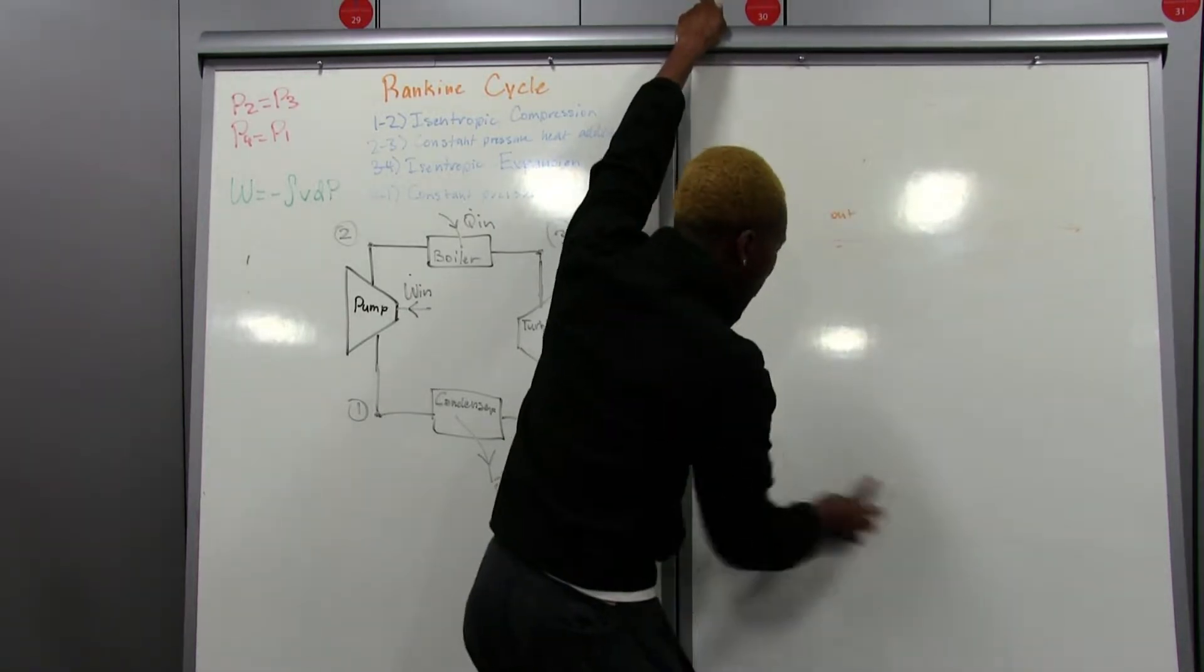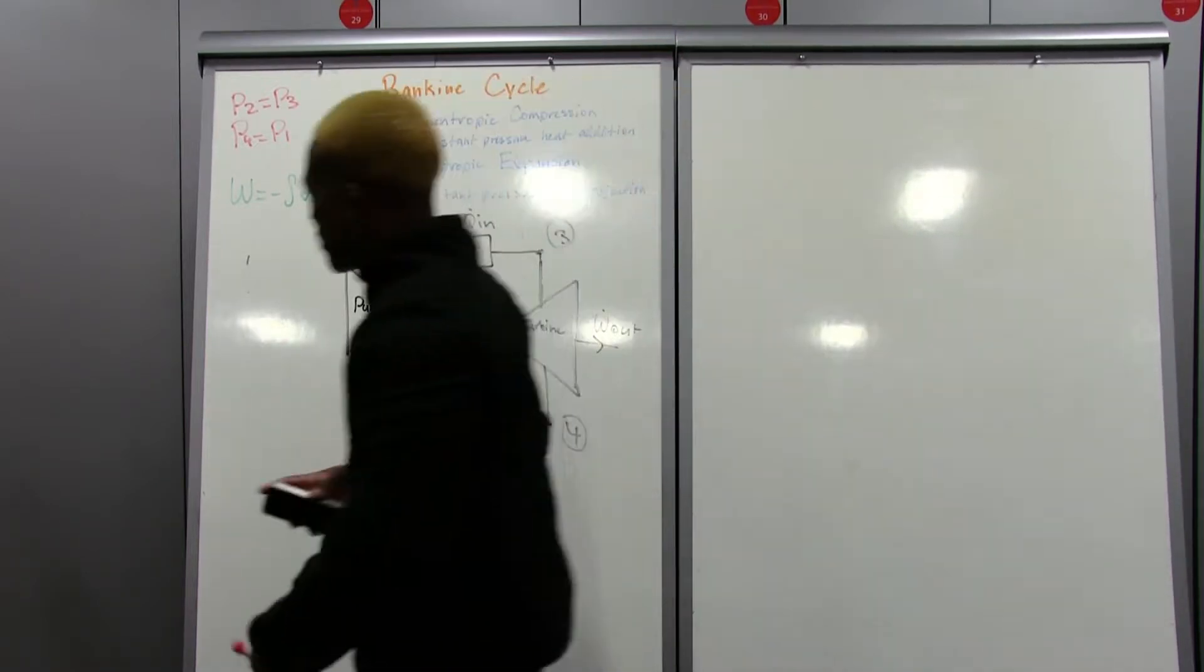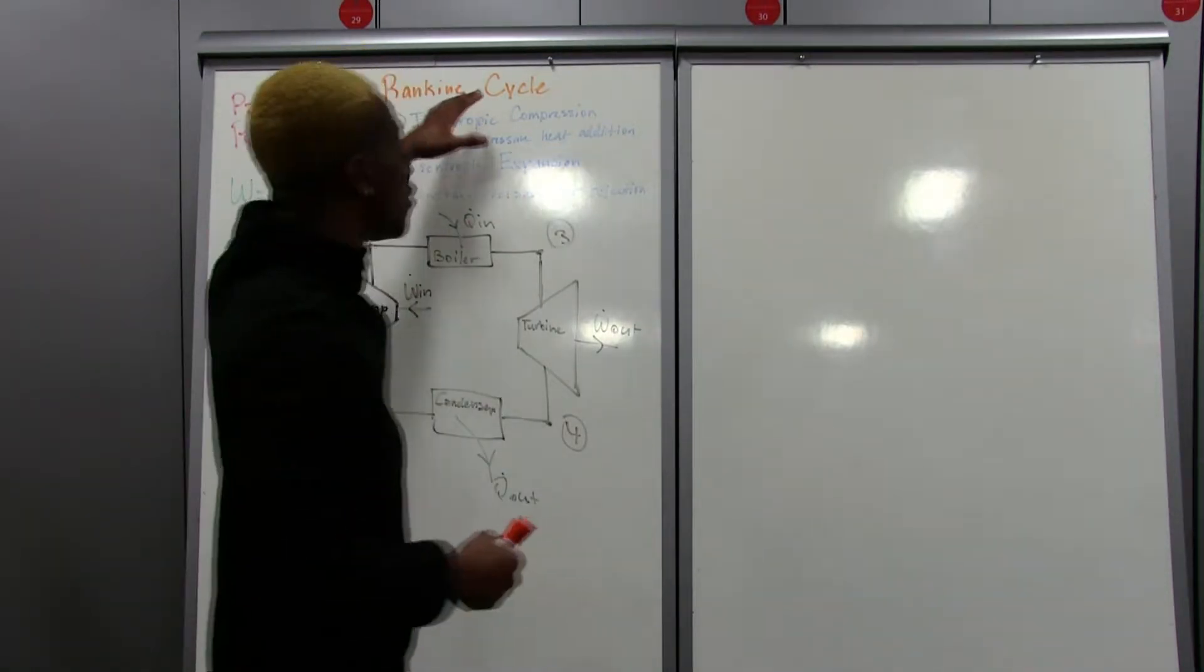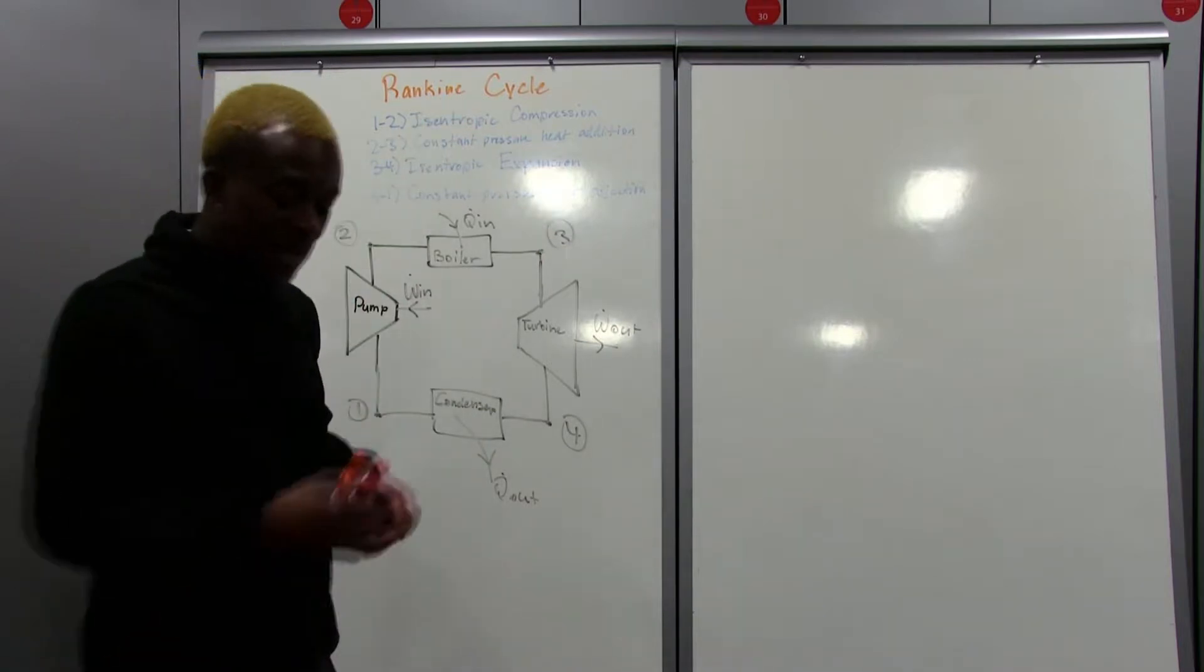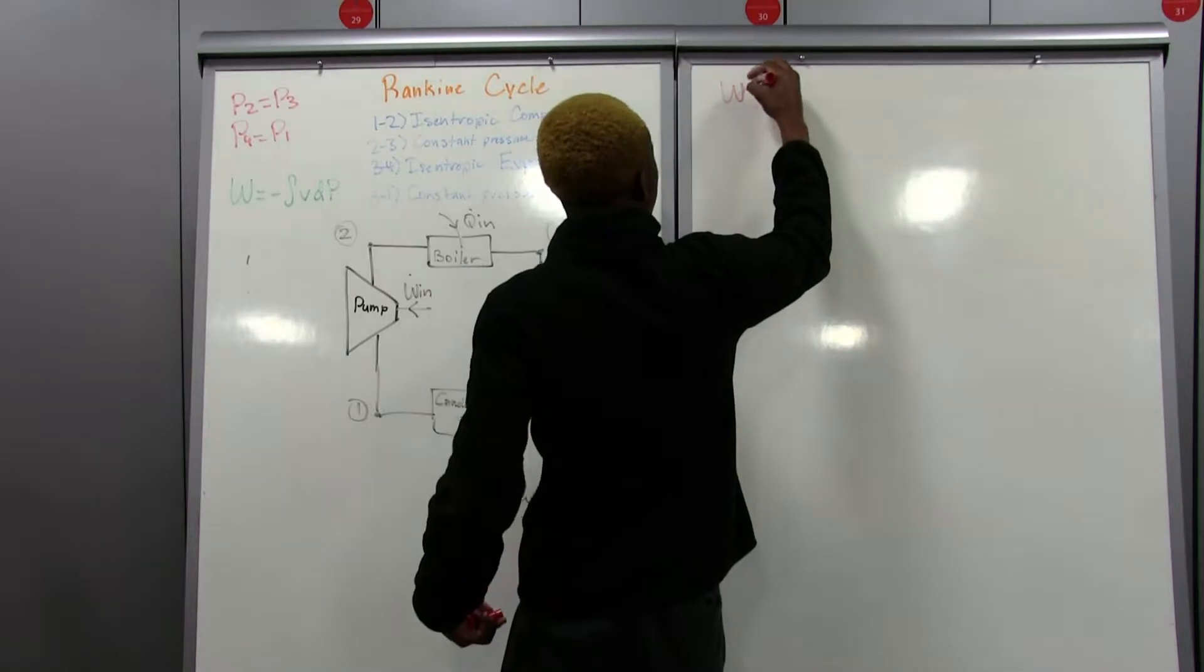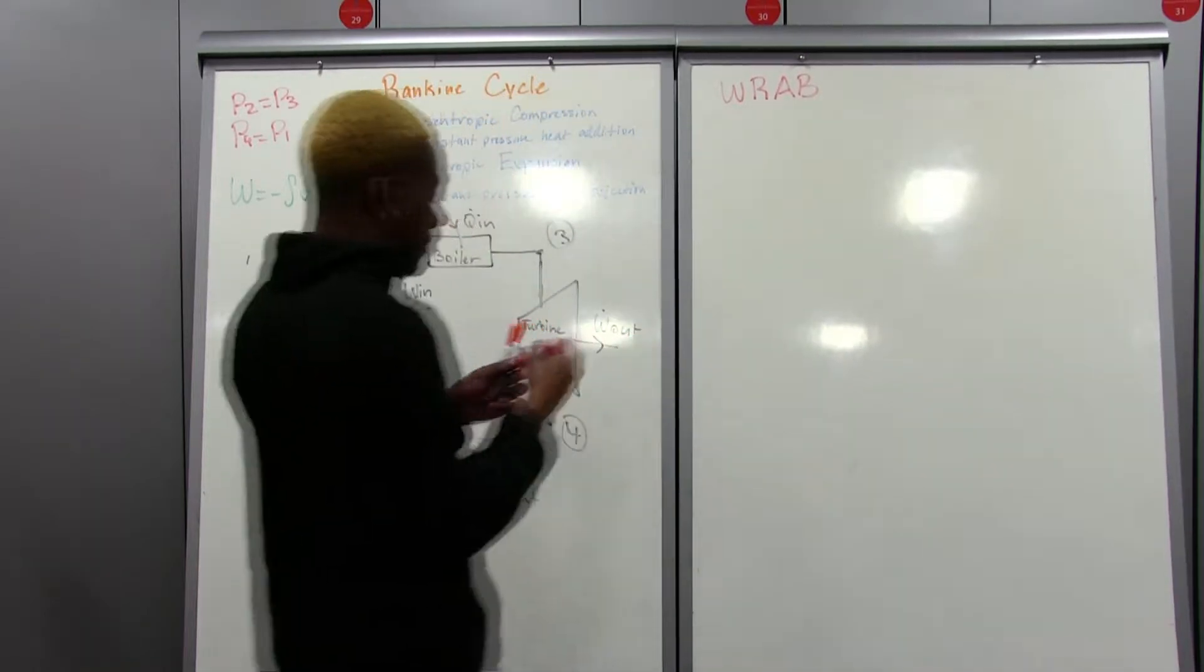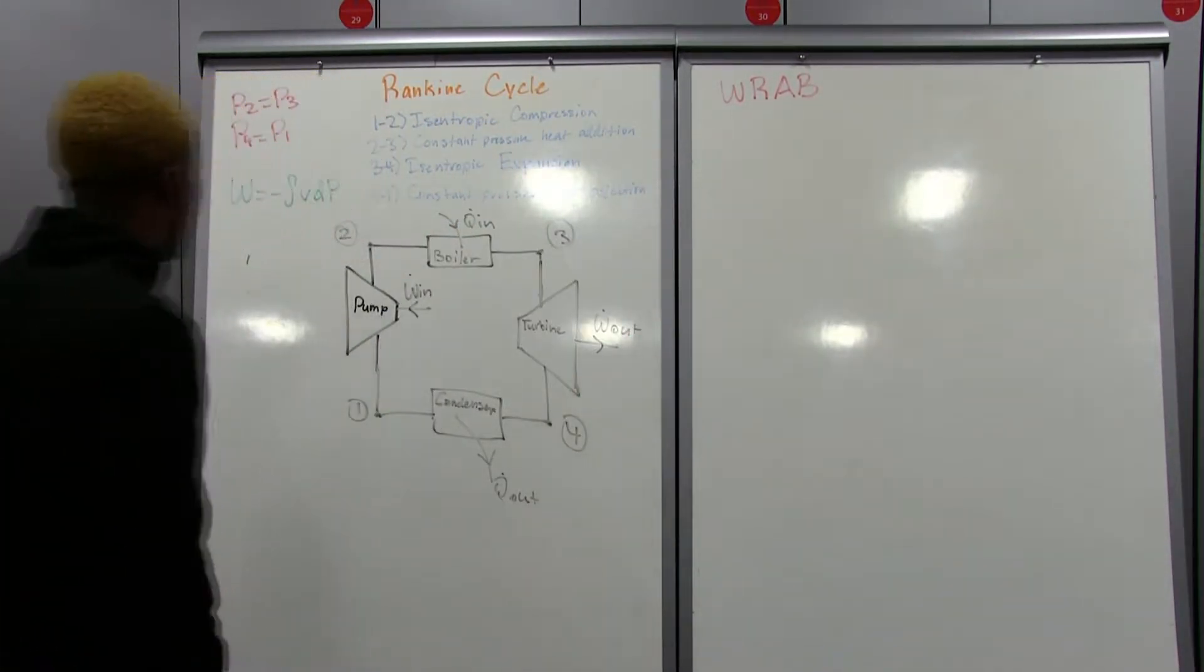We need to draw that dome in there to represent the phase changing diagram. And just know that the only difference between the Rankine Cycle and the Brayton Cycle is the fact that the Brayton Cycle uses air and the Rankine Cycle uses water. I use RAW. Water for the Rankine, air for the Brayton. That's the little mnemonic I use to remember that.